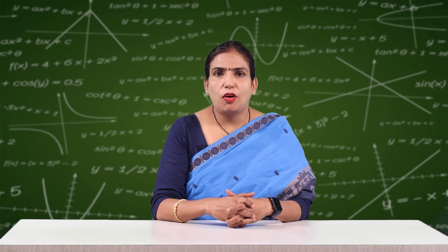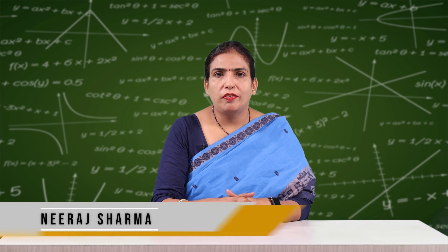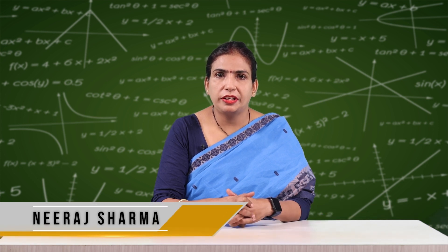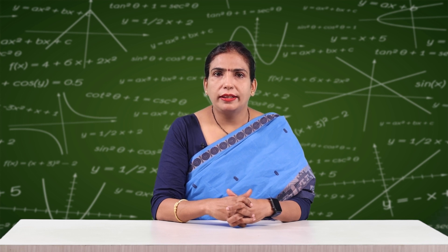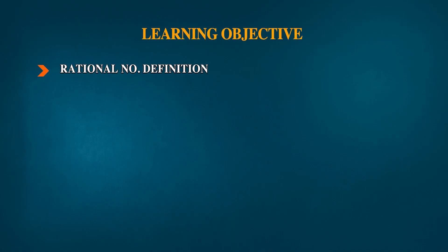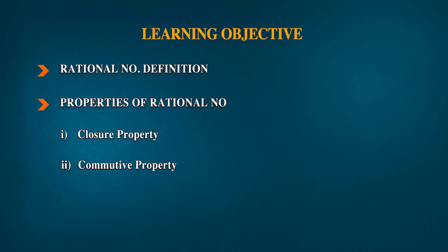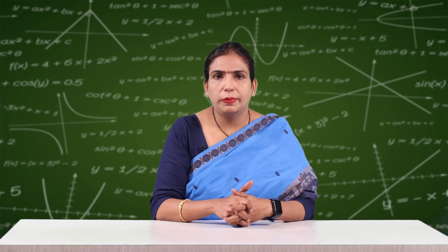Hello dear students, welcome to the very first session of Class 8, Chapter 1: Rational Numbers. Today we are going to start with the very first topic of Part 1 — Rational Numbers. We will discuss the definition and properties of rational numbers. In this session, we will cover two properties: Closure property and Commutative property.